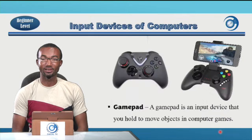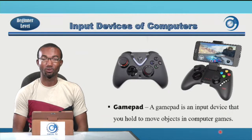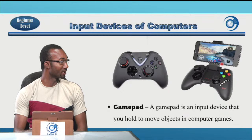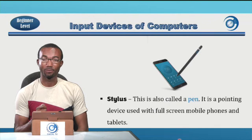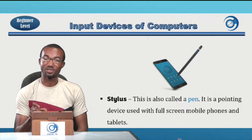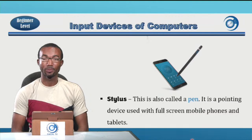The next pointing device is the gamepad. A gamepad is an input device that you hold to move objects in computer games. It is normally used in computer games. The stylus, also called a pen, is a pointing device used with full-screen mobile phones and tablets to interact with the device.